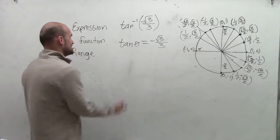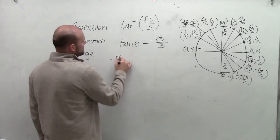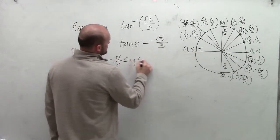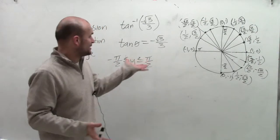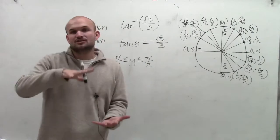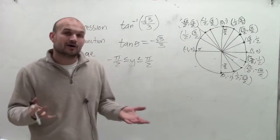The range when dealing with the inverse tangent means that the function has to be between negative pi halves and positive pi halves. So what I need to do is remember the tangent of an angle represents the y-coordinate over the x-coordinate when dealing with coordinate points on our unit circle.